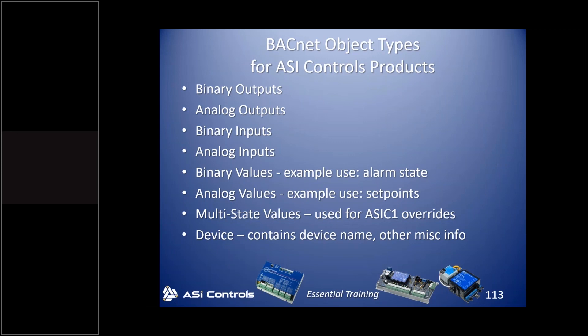For software points, there are binary values and analog values — binary is on/off, analog is numeric. A binary value could be an alarm status point; an analog value could be a set point not related to a hardware input or output but something you might want to see in the BACnet front end. We also support an object called a multi-state value — like an enumerated list where number 1 might represent one thing and number 2 something different. We use those for ASIC/1 overrides; we don't use multi-state values in ASIC/3s.